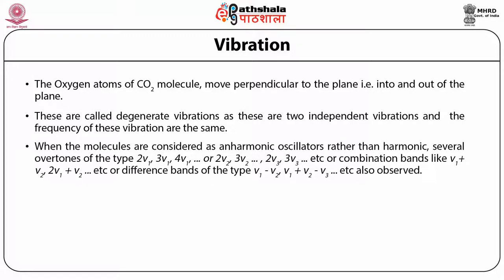When the molecules are considered as anharmonic oscillators rather than harmonic, several overtones of the type 2nu_1, 3nu_1, 4nu_1, or 2nu_2, 3nu_2, 2nu_3, 3nu_3, etc., or combination bands like nu_1 + nu_2, 2nu_1 + nu_2, etc., or difference bands of the type nu_1 minus nu_2, nu_1 + nu_2 minus nu_3, and so on, are also observed.